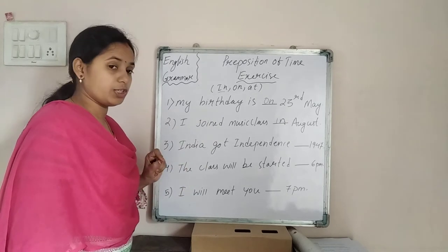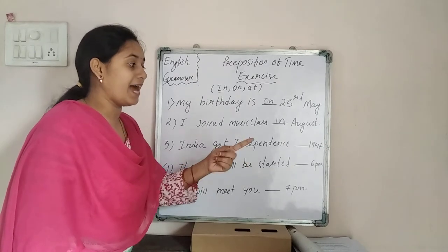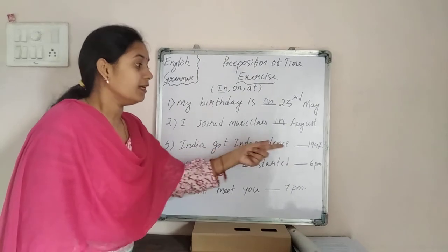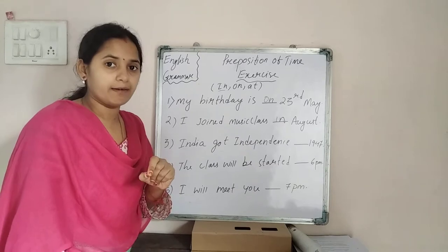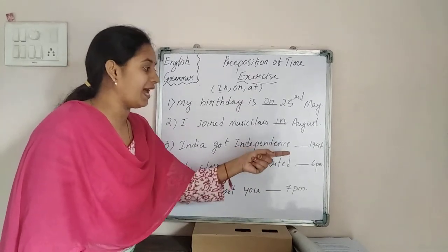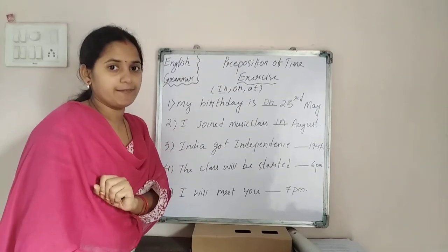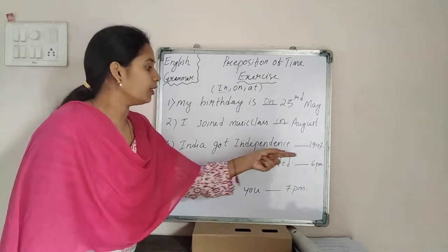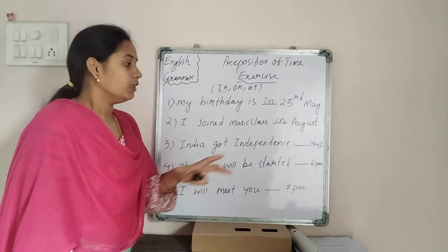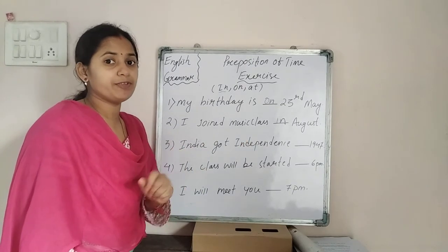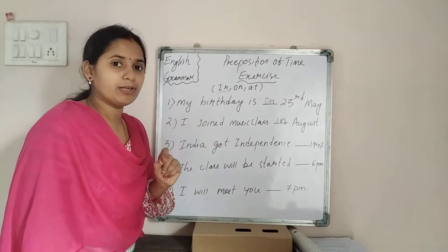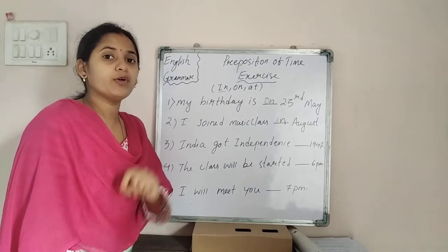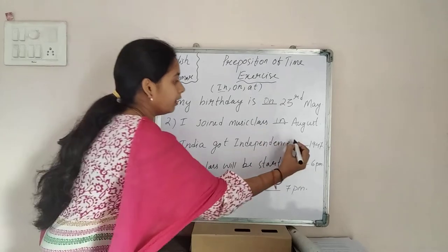Next question: India got independence since dash 1947. Here 1947 is a year. So which preposition do we use? Before a year we have to use in. Before a month also we use in. So the answer is in — India got independence in 1947.